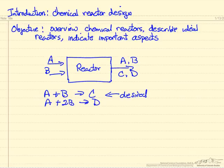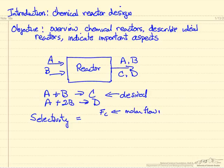What tends to be the overriding factor is often the selectivity, namely how often does this desired reaction occur compared to all possible reactions. Selectivity is defined as the molar flow rate for component C divided by the flow rate for C plus D, so the total products formed, what fraction.